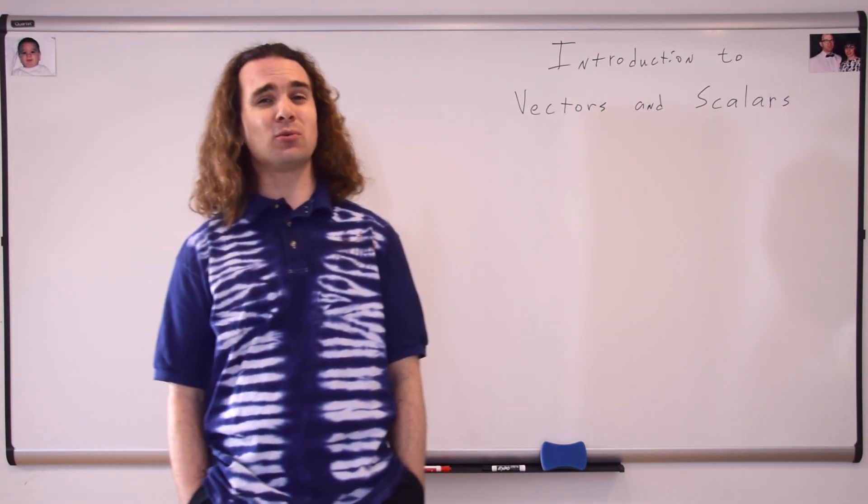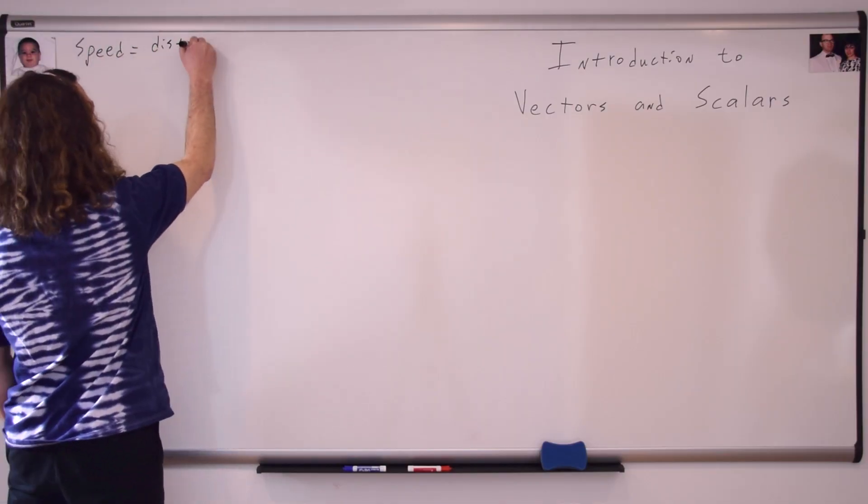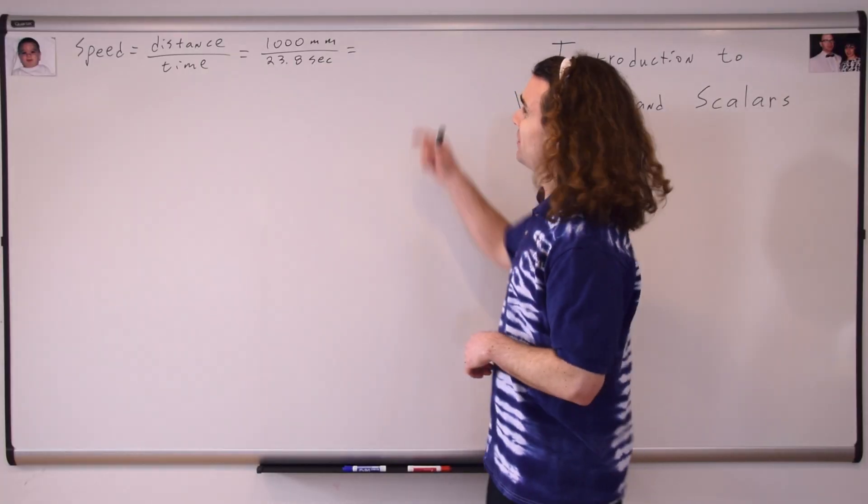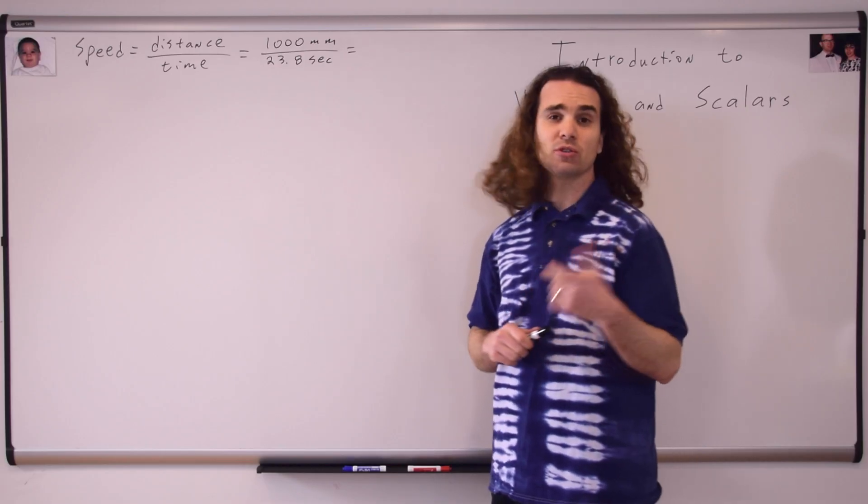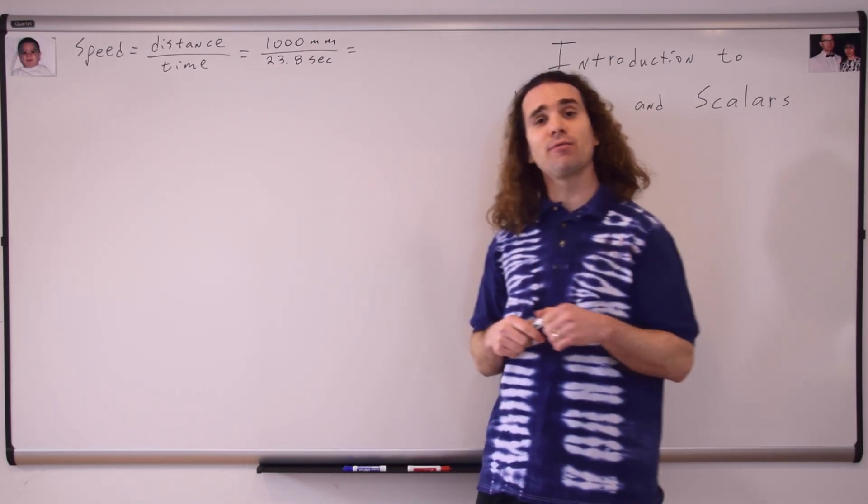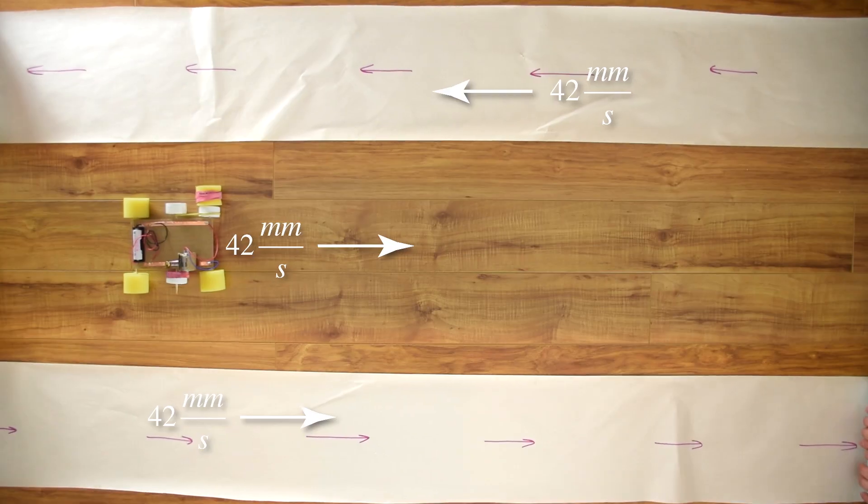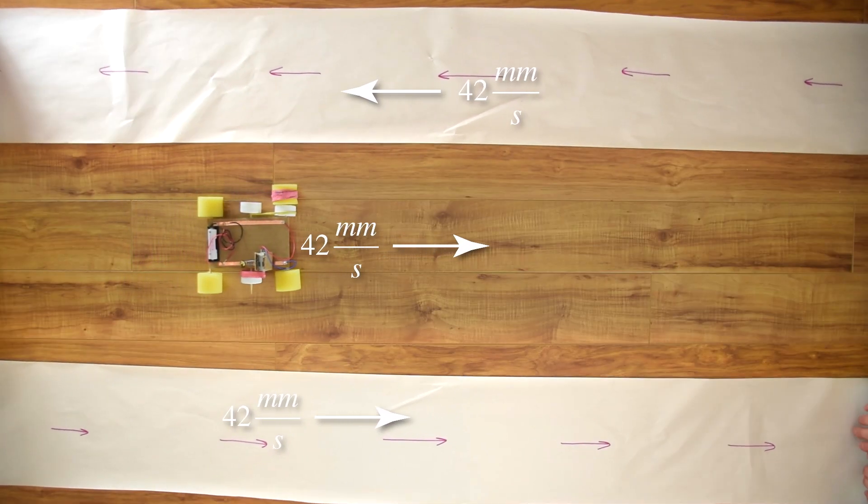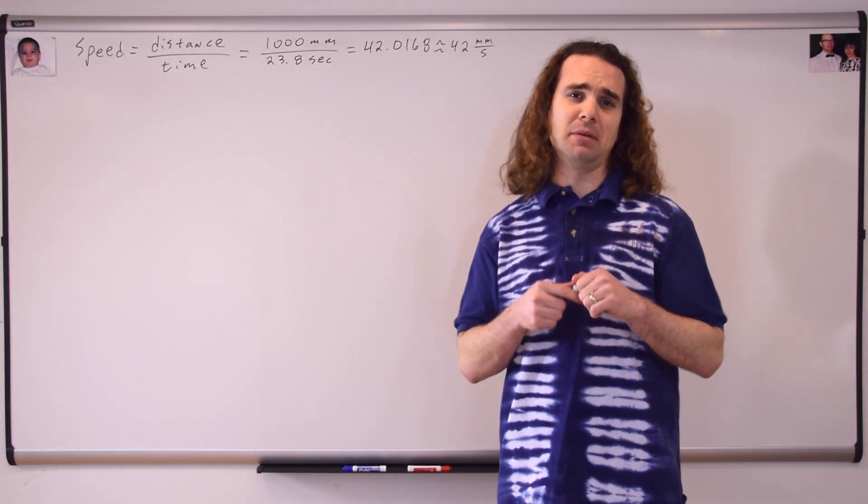So, we can use the equation speed equals distance over time to figure out the magnitude of her velocity. Now, we can substitute in 1,000 millimeters for her distance traveled and the time it took her to travel that distance, which was 23.8 seconds. And what do we get for the speed of our race car? 42.0168 or 42.0 millimeters per second. Actually, for the purposes of today's examples, we're just going to use two significant digits. So, now we know that Slow Velocity Racer can move at approximately 42 millimeters per second.